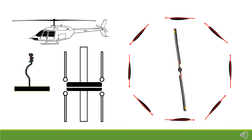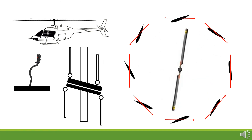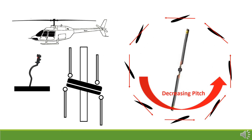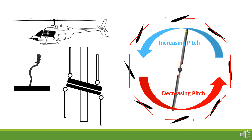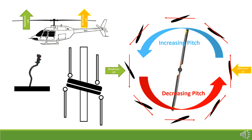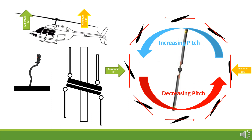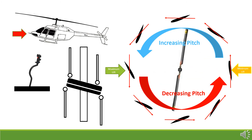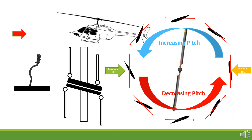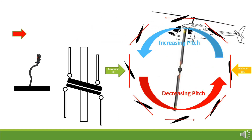Moving the cyclic backward causes the swashplate to tilt toward the rear of the helicopter. This causes the connecting rods to decrease the pitch of the rotor blades as they move toward the rear and increase pitch as they move toward the front, tilting the rotor disc to the rear with maximum lift toward the nose and minimum lift toward the tail. When the rotor disc rotates backward, it produces a force acting toward the rear of the aircraft, makes the nose pitch up, increases rotor disc tilt, and increases rearward acceleration. A corresponding increase in collective control is required to keep the helicopter from losing altitude as it moves backwards.